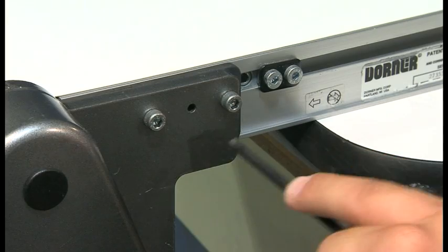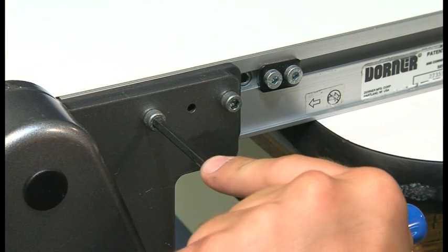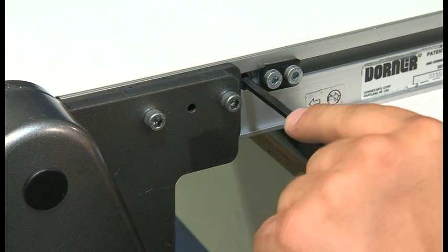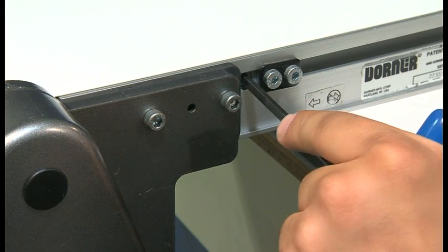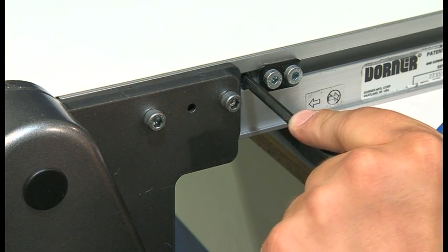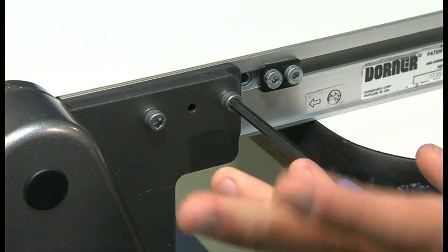On the side which the belt is tracking toward, loosen the headplate fastening screws. With the conveyor running, rotate the tracking cam in small increments until the belt tracks in the center of the conveyor. Then re-tighten the headplate fastening screws.